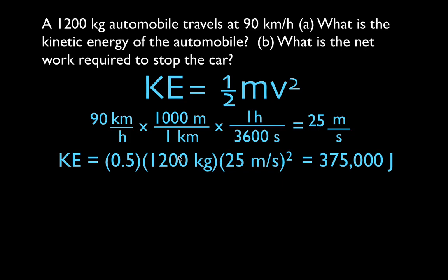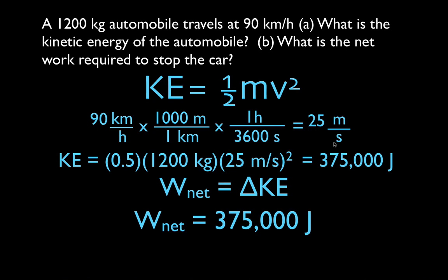Now, we want to figure out how much work would be required to stop this car. To do that, we're going to use the work energy theorem. The work energy theorem says the net work done on the car equals the change in kinetic energy. The car has this kinetic energy. We want to stop it, which means we want to bring the kinetic energy to zero, which simply means that in order to stop the car, we're going to have to do 375,000 joules of work.